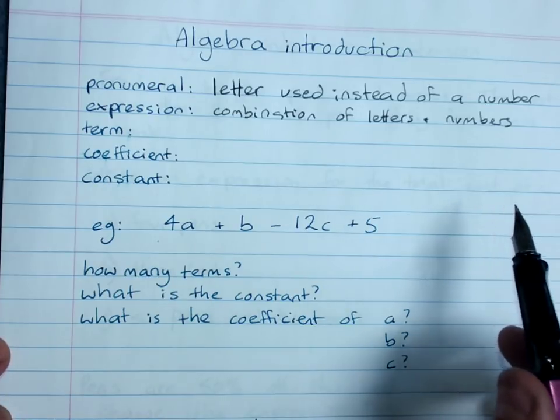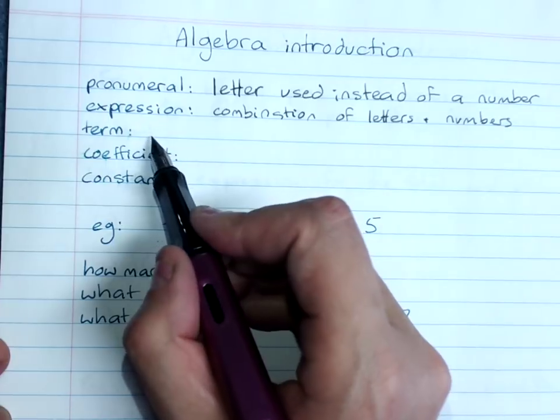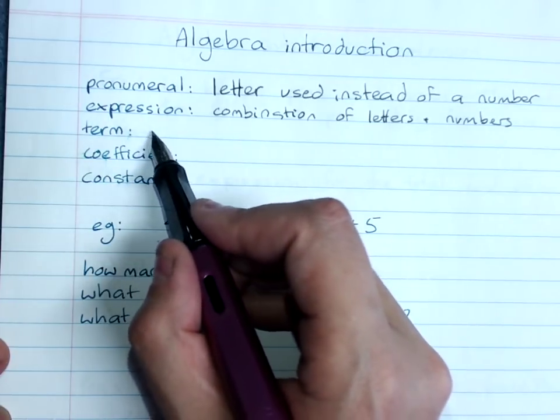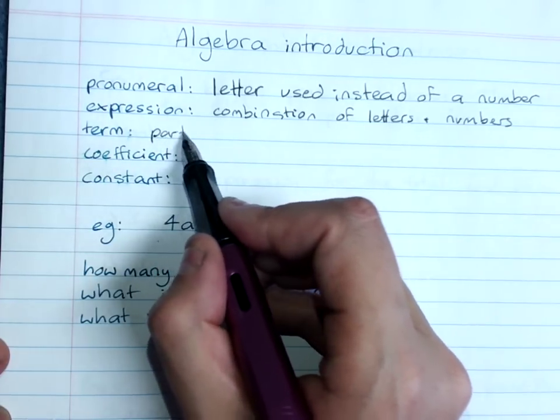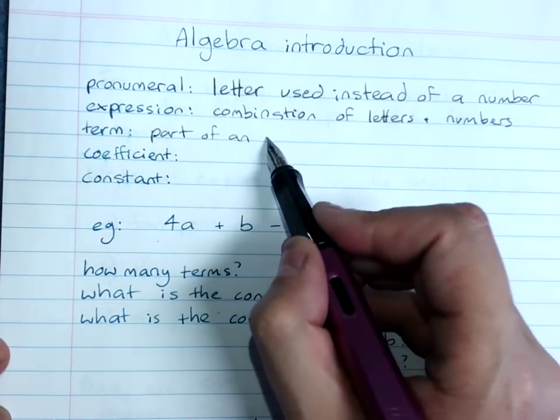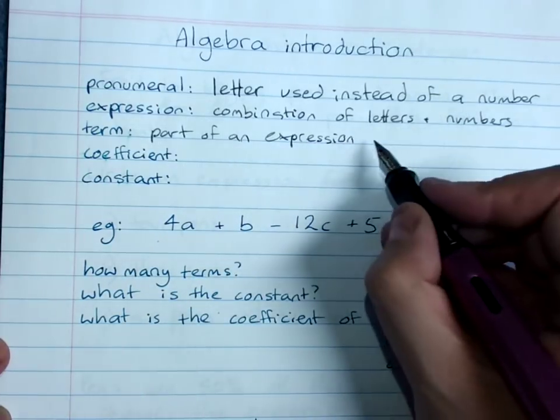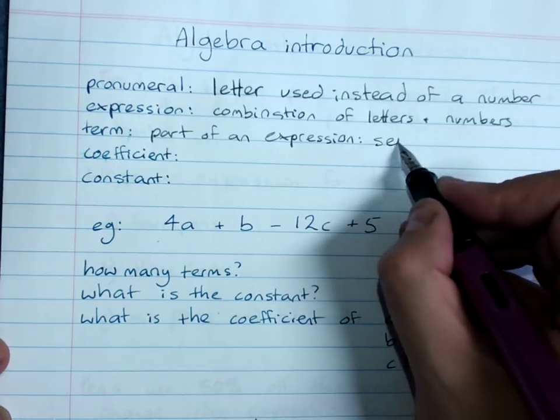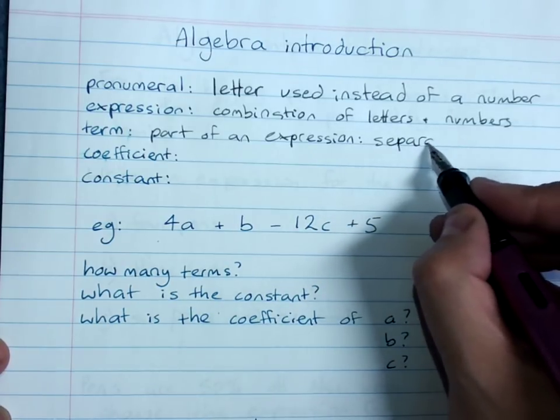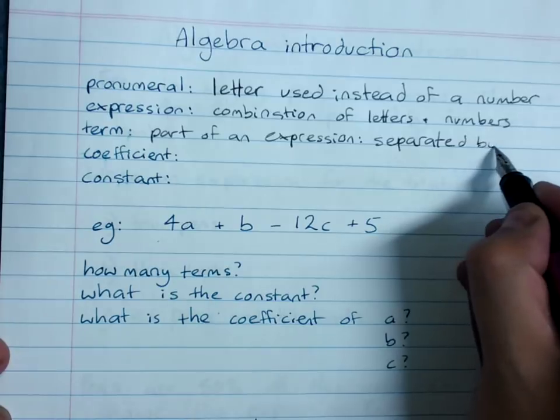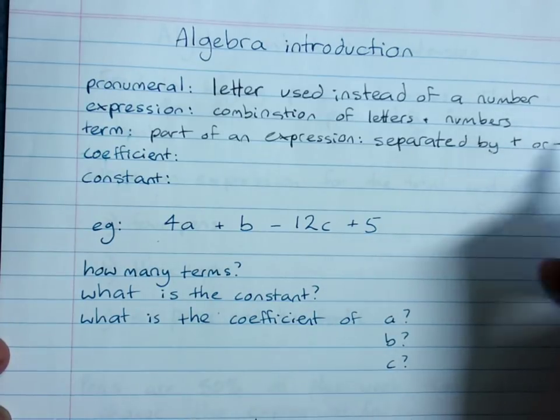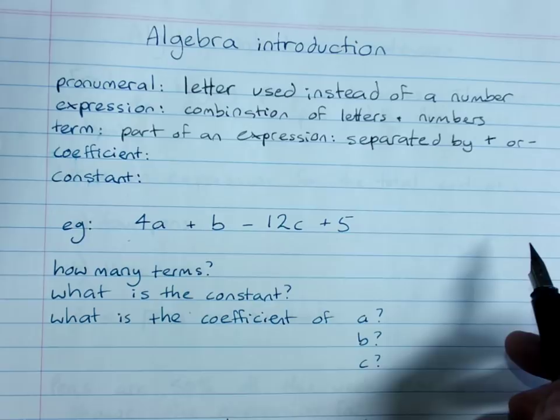An algebraic term is part of an expression, and they are separated into separate terms, separated by plus or minus. So we'll give examples of that so it'll be easier.